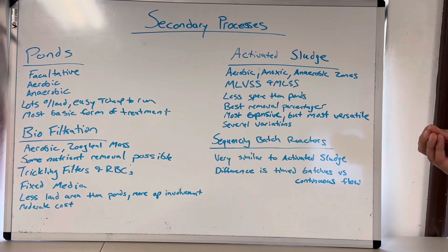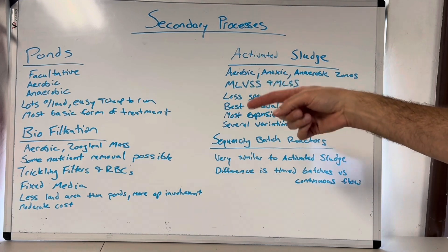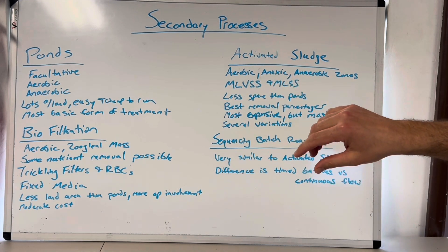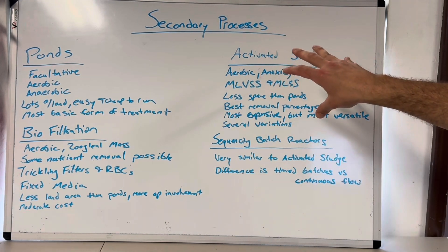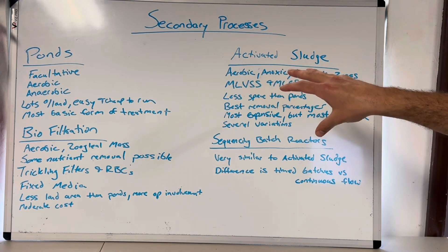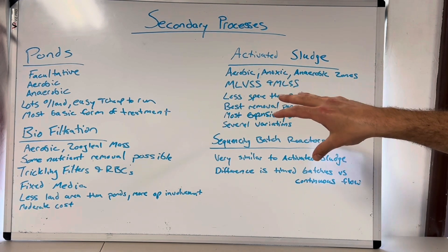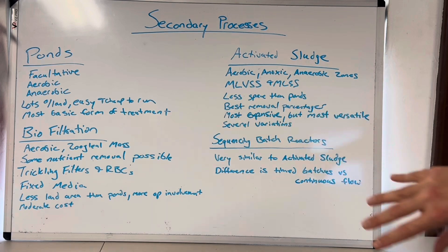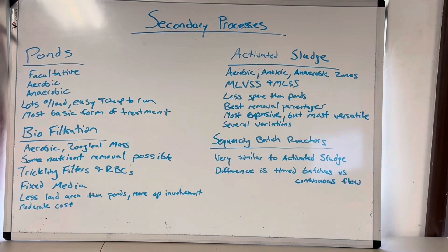Ponds are very good at removing BOD and TSS. When you have an aerobic pond further downstream after the BOD is removed, you could even nitrify and get rid of your ammonia, turning it to nitrates. But one thing that's really difficult with ponds is total nitrogen removal — that's a big drawback, especially in California with our new regulations about nutrient removal.